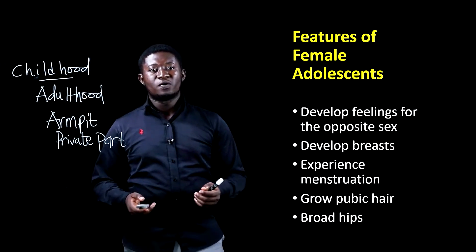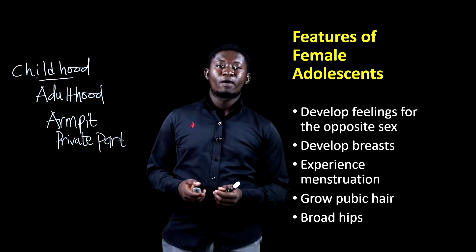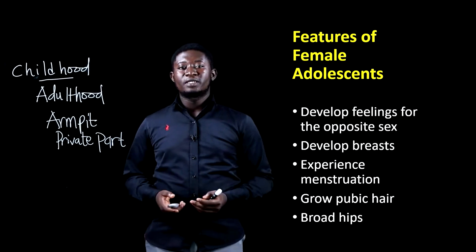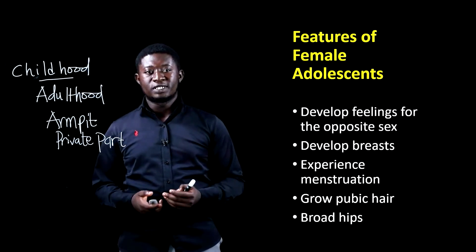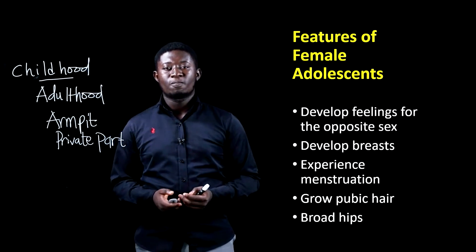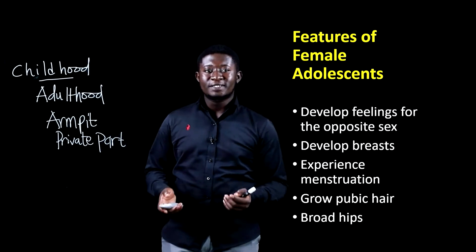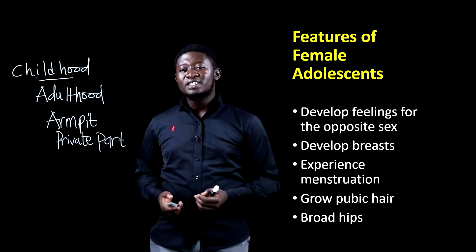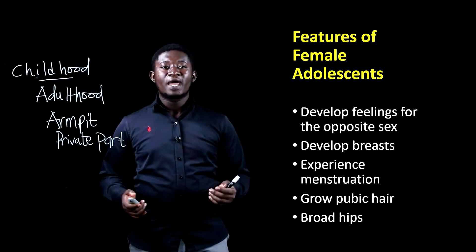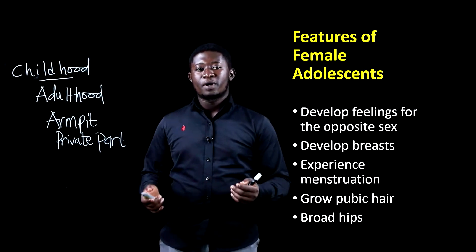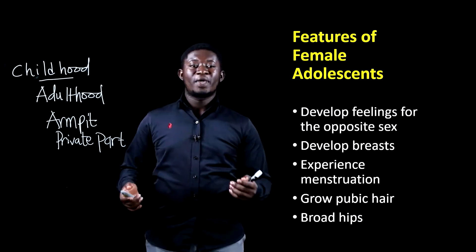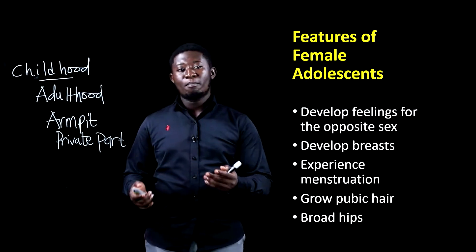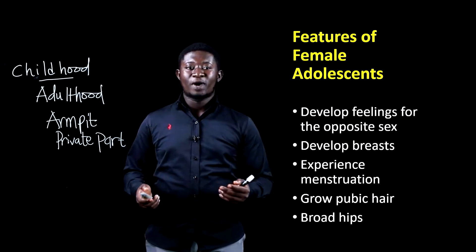When we talk about female adolescence, one key thing also, just like the males, is they develop feelings for the opposite sex. They also start developing breasts, and then they also start to experience menstruation at the end of every month. They also grow pubic hair, which is the growth of hair on the armpits and the private parts.